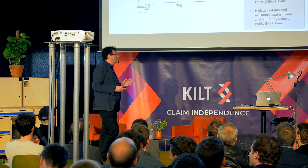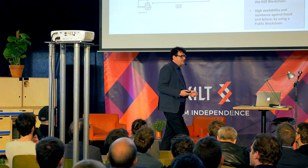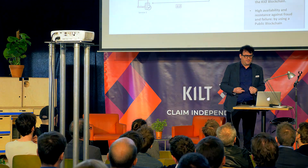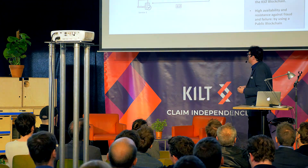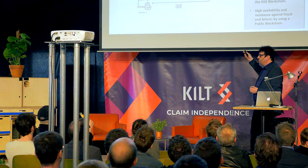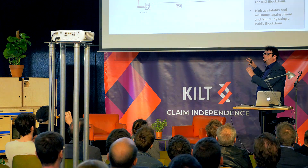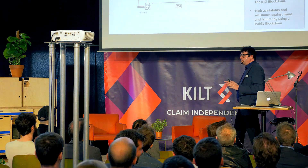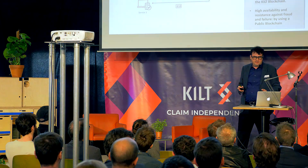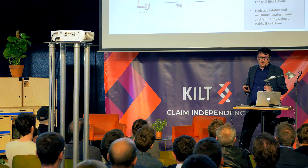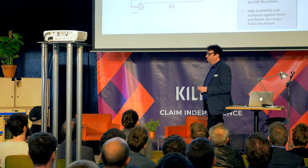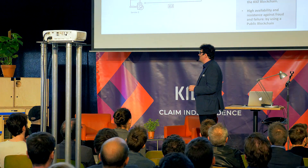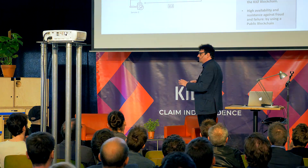The whole thing we build is privacy by design. No personal data is ever stored on a blockchain, but we still have the advantages of the blockchain: high availability — you cannot switch off the blockchain, so validity can always be checked, with no possibility to change that. It is completely resistant against failure and completely resistant against fraud. This is a very brief overview of what KILT does; how it really works we will see later.